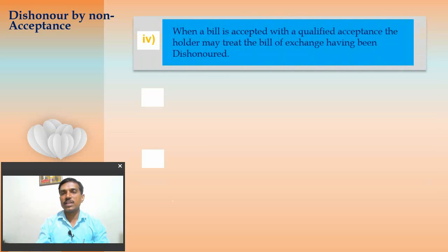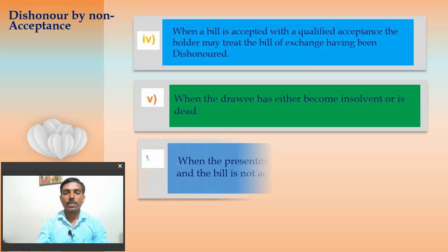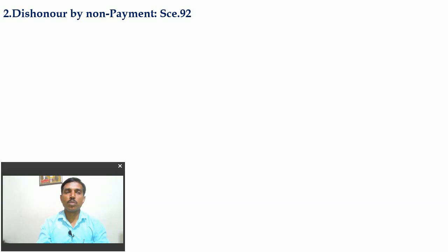When the bill is accepted with a qualified acceptance, the holder may treat the Bill of Exchange as having been dishonored. When the drawee has either become insolvent or is dead, the bill becomes dishonored. When the presentment for acceptance is excused and the bill is not accepted, the bill is dishonored by non-acceptance.